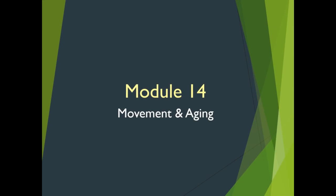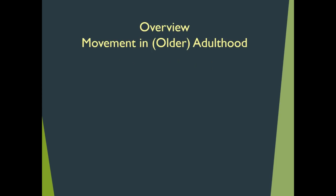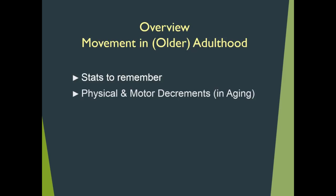As we tackle module 14, special attention to the aging population and the movement changes that transpire across all these years. We kick this off with a discussion of statistics that might surprise you. As in any discussion of aging, it is inevitable that we are going to discuss the physical and motor decrements associated with it. Recall that there's an exercise aging cycle section in an earlier module — I have moved that discussion in here.